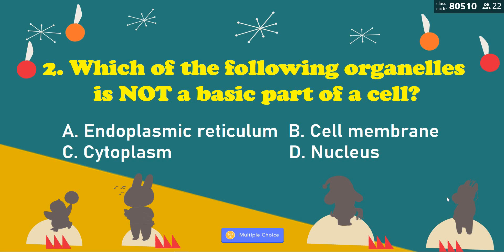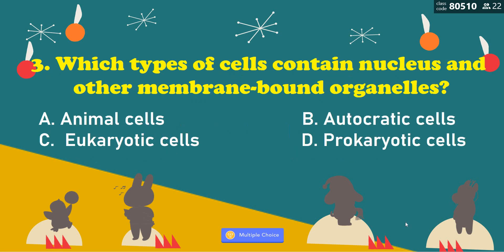Number 2: Which of the following organelles is not a basic part of a cell? A, endoplasmic reticulum; B, cell membrane; C, cytoplasm; D, nucleus. That's also correct — it is A, endoplasmic reticulum.